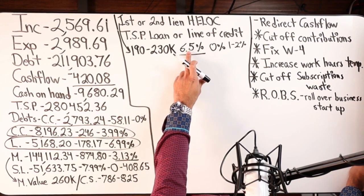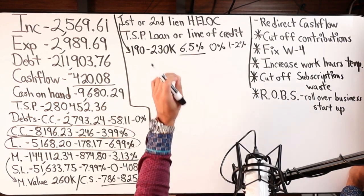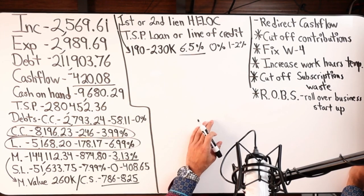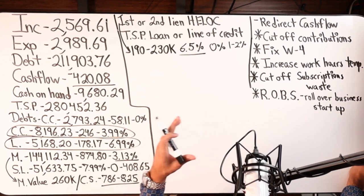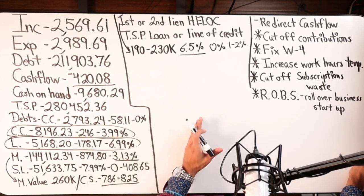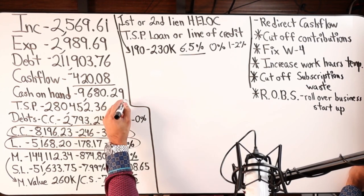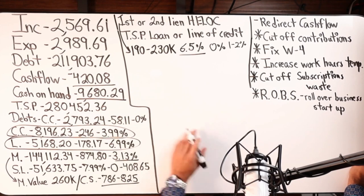Chances are with this really good credit score they could potentially get an introductory rate of less than 3.99%. I've seen 2.99%, I've seen two and a half to 1.99% for a period of time, and that could really buy us some time, put us in a better position.